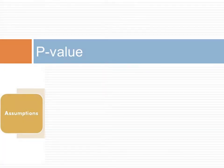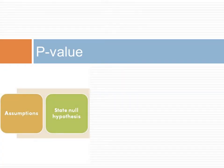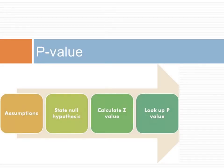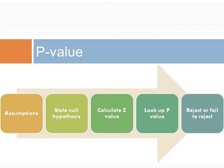Here is a review of the steps in the framework. The first step is to test assumptions, including independence and skewness. The second step is to state the null hypothesis and decide if it is a one-sided or two-sided test. The third step is to calculate the z-value from sample point estimates. The fourth step is to look up the p-value, paying attention to whether it was a one-sided or two-sided test. Finally, we reject or fail to reject the null hypothesis by comparing the p-value to alpha — the extent of type 1 error that we are willing to tolerate.